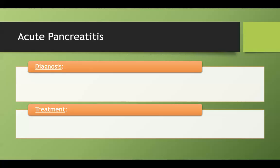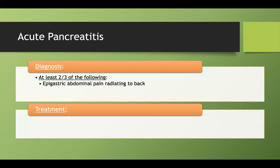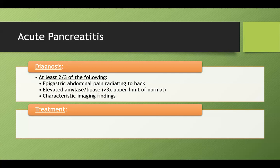Diagnosing acute pancreatitis requires two out of three criteria: epigastric pain radiating to the back; elevated amylase or lipase at least three times the upper limit of normal; or characteristic imaging findings showing an edematous, boggy, unclear-bordered pancreas compared to a normal small well-demarcated pancreas.